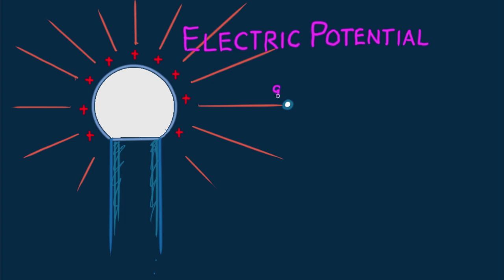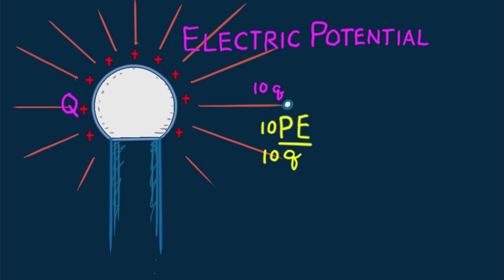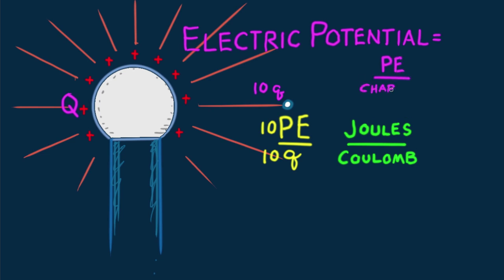Consider a test charge in the field of the charged sphere. At any point, a greater quantity of charge means a greater amount of potential energy. But — get this — not a greater amount of potential energy per charge. Two times the charge gives two times the potential energy. Ten times the charge gives ten times the potential energy. Two divided by two is no different than ten divided by ten. Whereas potential energy is measured in joules and charge is measured in coulombs, the ratio of potential energy per charge is measured in joules per coulomb. Our definition of electric potential is the ratio of potential energy per charge. We call the ratio joules per coulomb: volts. Whereas potential energy is measured in joules, electric potential is measured in volts.